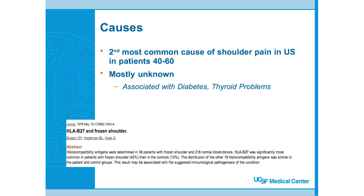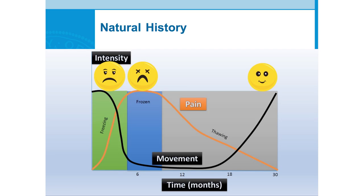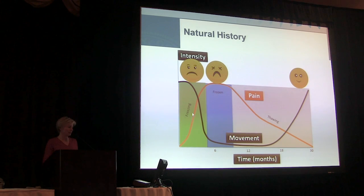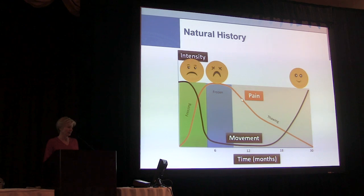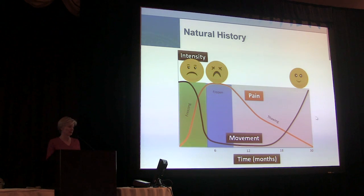Frozen shoulder is the second most common cause of shoulder pain in the US, primarily in patients aged 40 to 60. We don't really know why people get it, but diabetics, patients with thyroid problems, and those with autoimmune disorders tend to be prone. The natural history is difficult for both patient and provider: the patient is initially painful, then gets stiff, then stuck in stiffness, and then pain gradually decreases as motion improves.